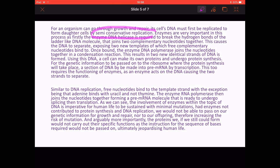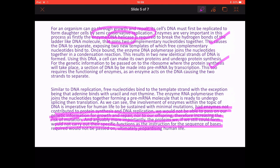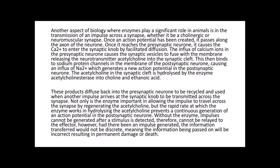The next section contains a lot of A-level content: semi-conservative replication, naming enzymes such as DNA helicase — clearly demonstrating commitment to knowledge and confidence in writing it down. Any essay that includes information on DNA transcription, translation, RNA, and similar topics is really strong because generally students can only write about these if they've studied A-level biology. The second part of this paragraph has a much stronger link to the theme. It says: 'Had enzymes not contributed to protein synthesis and DNA replication, we would not be able to pass on our genetic information for growth and repair, nor to our offspring.' It also discusses the increased risk of mutation if enzymes don't work properly — a stronger link to the importance theme.